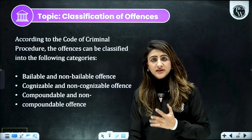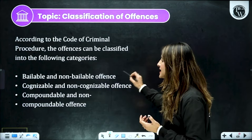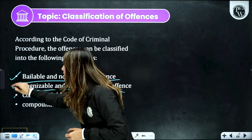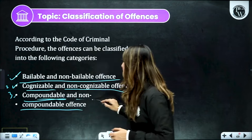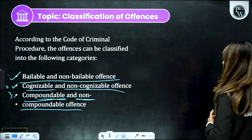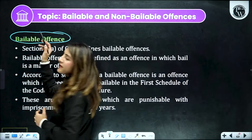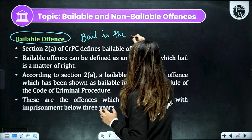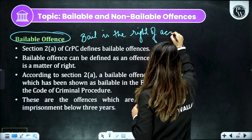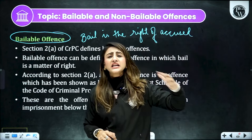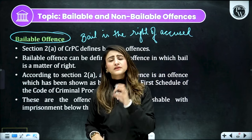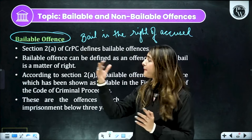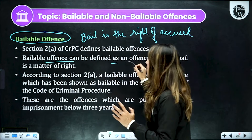Iske baad baat karte hain classification of offenses ki. Offenses ko categorize kiya gaya hai teen categories mein: number one — bailable and non-bailable offenses; number two — cognizable and non-cognizable offenses; and number three — compoundable and non-compoundable offenses. Sabse pehle aate hain bailable offense mein — toh bailable offense mein seedha-seedha bail milna, bail is the right of the accused. Bailable mein, jo accused ne crime kiya hota hai, woh utna zyada heinous ya serious nature ka nahi hota — woh petty offenses ho sakte hain. Wahaan par bail milna right hota hai — matlab koi bhi judge mana nahi kar sakta ki aapko bail nahi milegi.